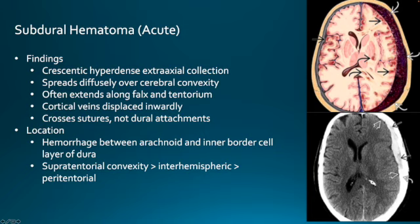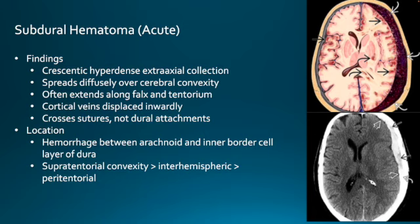So let's talk about subdural hematomas — specifically acute subdural hematomas. The findings buzzwords are crescentic and hyperdense extra-axial collection. These tend to spread diffusely over the cerebral convexities, as you can see in this schematic and in our case. They often extend along the falx and the tentorium, not just over the convexities. The cortical veins are displaced inwardly by these collections — a finding we can see on MR, though it's a little tougher to see on CT. These collections routinely cross sutures, but not dural attachments.